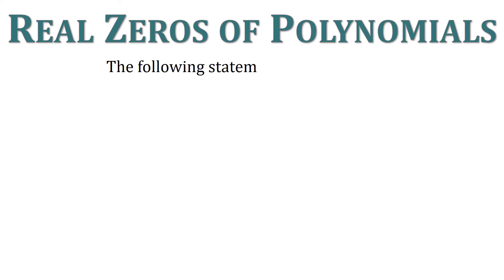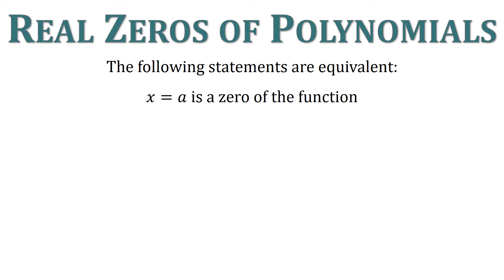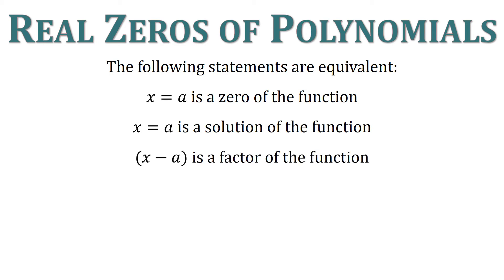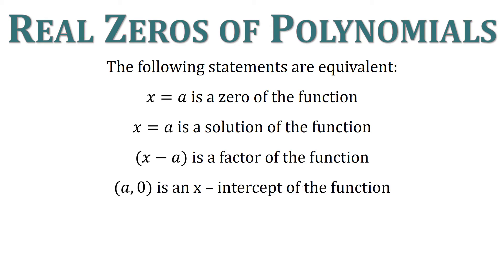Real zeros of polynomials — another word for zero is solution. Let's look at the following statements that all mean the same thing: x equals a is a zero of the function; x equals a is a solution of the function; x minus a is a factor of the function; and (a, 0) is an x-intercept of the function. All four statements mean the same thing — if you plug a into the function, it makes the function equal zero.